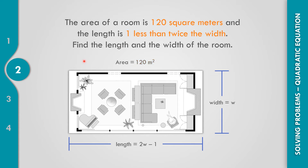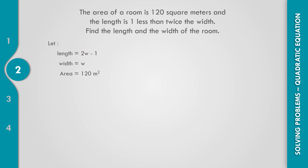The area, which is 120 square meters, equals length times width. So 120 equals (2W minus 1) times W.